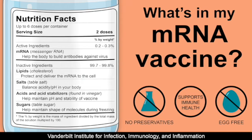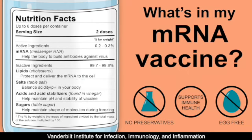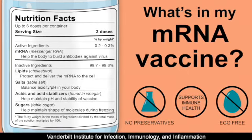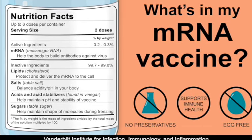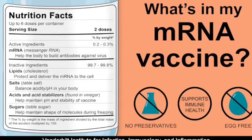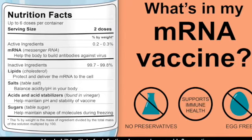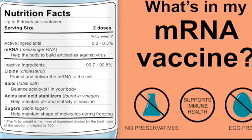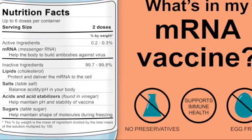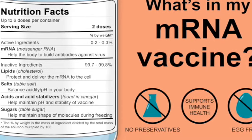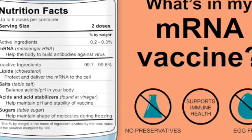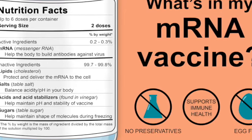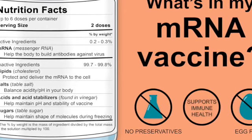Messenger RNA vaccines, also called mRNA vaccines, were used to make some of the COVID-19 vaccines. mRNA vaccines make proteins in order to trigger an immune response. mRNA vaccines have several benefits compared to other types of vaccines, including shorter manufacturing times and, because they do not contain a live virus, no risk of causing disease in the person getting vaccinated. mRNA vaccines are used to protect against COVID-19.